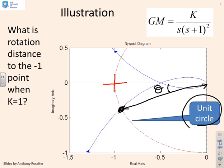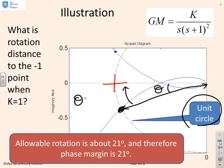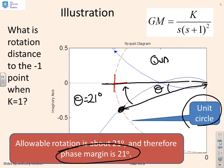If I put in an angle theta, then clearly if I rotate that point clockwise through angle theta, it will arrive at the minus 1 point. In this particular case, theta equals 21 degrees. So for this example, the phase margin is 21 degrees, because that's the clockwise rotation which will bring me to the minus 1 point. It's important to remember that theta is computed in quadrant 3, and it's treated as a positive number. So if I need a clockwise rotation to get to the minus 1 point, that's treated as a positive phase margin.